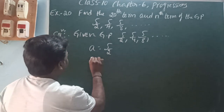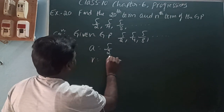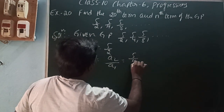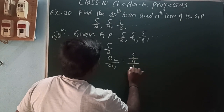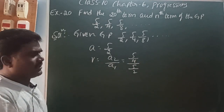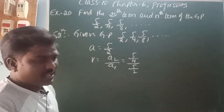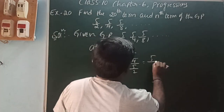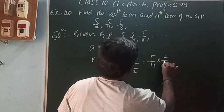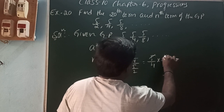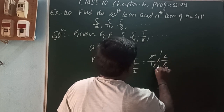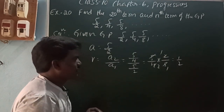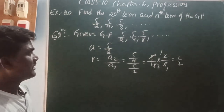Next, the common ratio r is equal to a₂ by a₁. So that is 5/4 divided by 5/2. A fraction in the denominator becomes reciprocal. So that is equal to 5/4 into 2/5. The 5s cancel, giving 1/2. The common ratio r is 1/2.